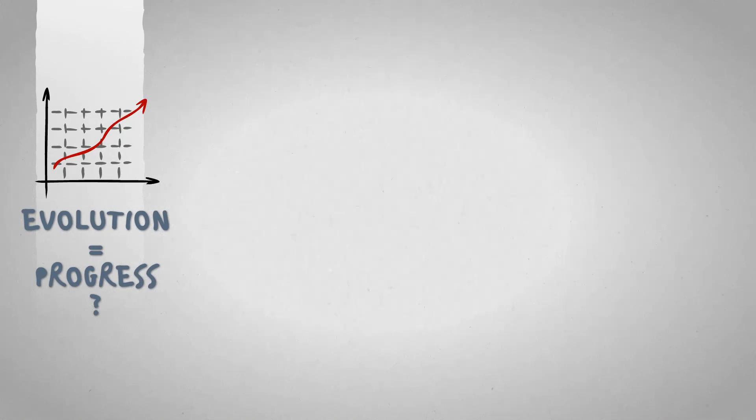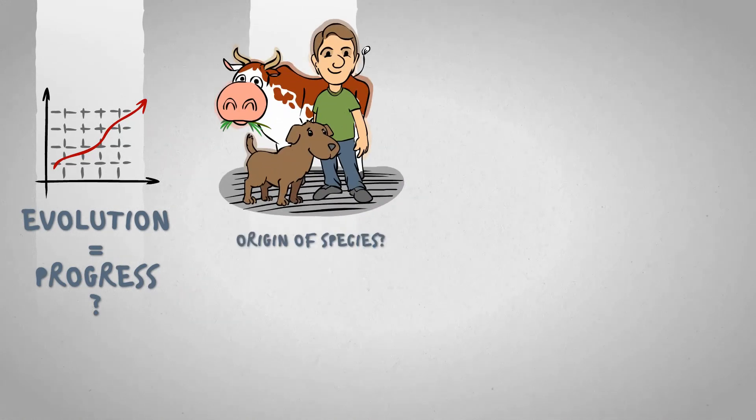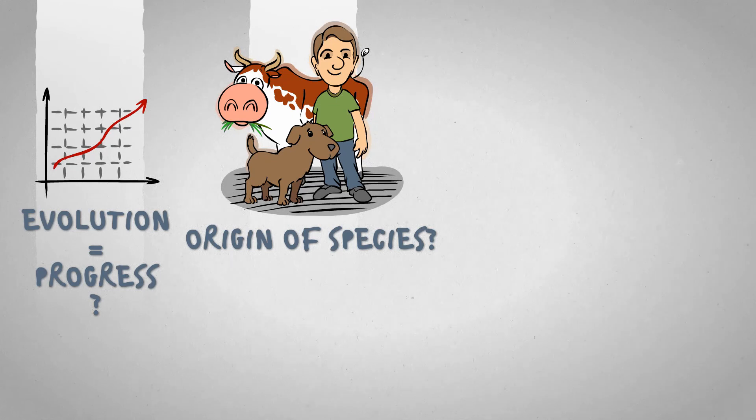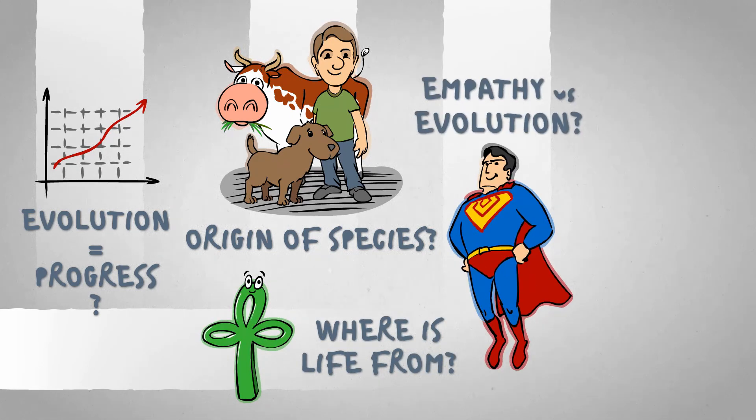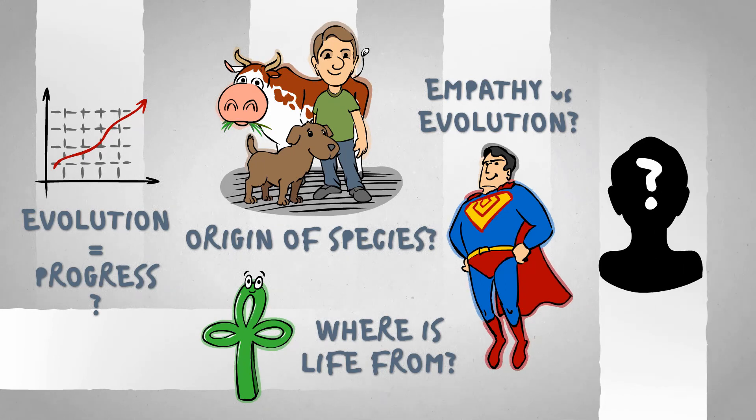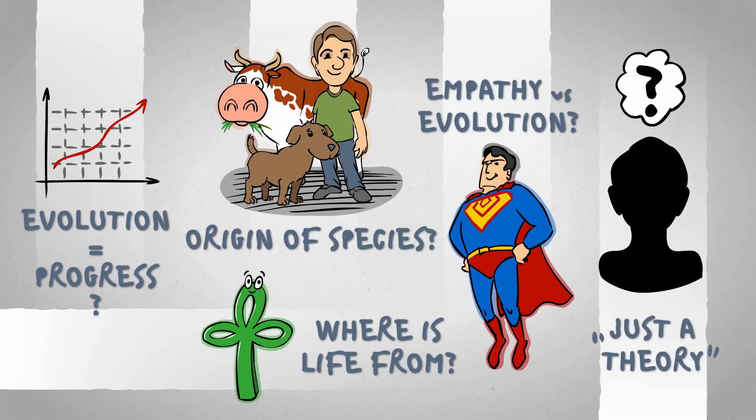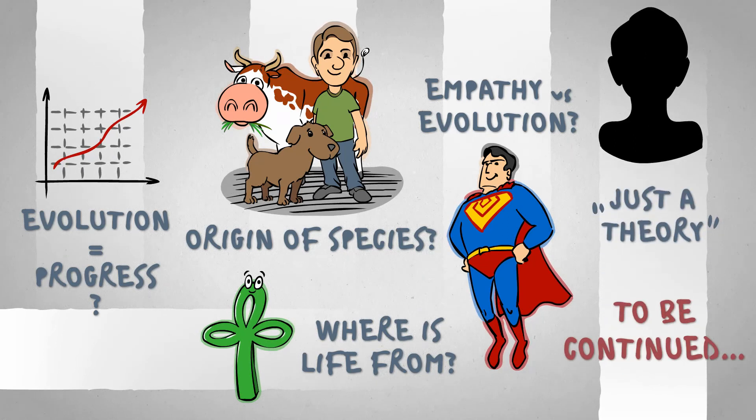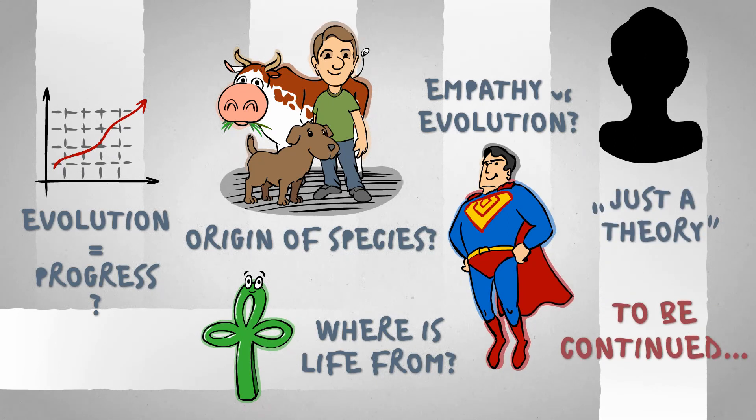But is evolution progress then? And where do all the species come from, not to mention life? Does whoever helps the weak go against evolution? And is it really true? After all, it's just a theory, right? Next time, we'll clear up some misconceptions.